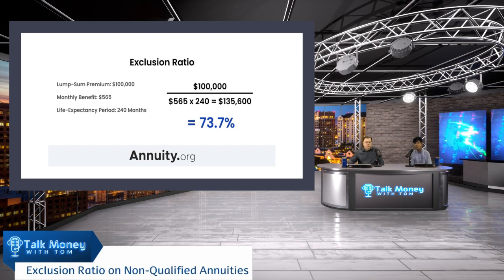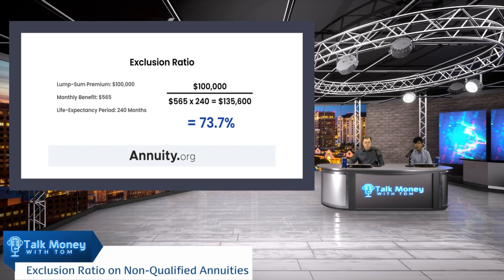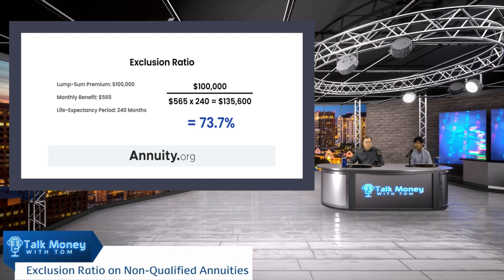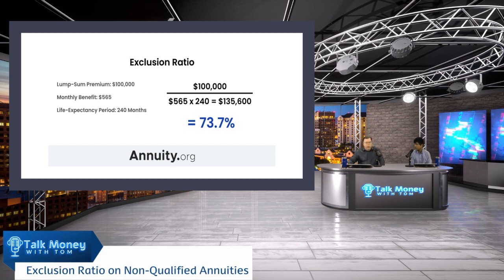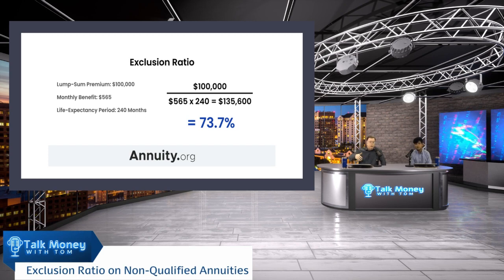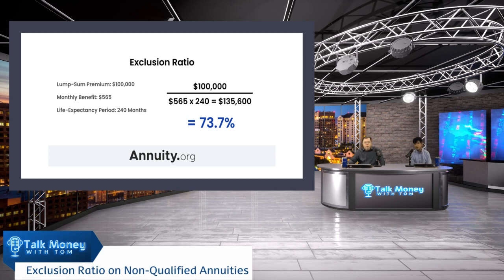Another thing with annuities: if you outlive that 240 months, 100% of that $565 payment would now be considered ordinary income and be fully taxable, because you have used up all that return of capital. You got back your $100,000, you live longer than expected, and now everything you're making is gain over and above — and that means it's taxable, which makes sense. You would have paid taxes on that $35,600, and then anything beyond 240 months is also taxable.